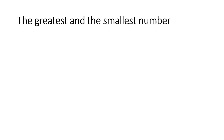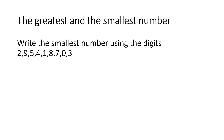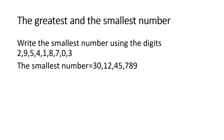To form the smallest number using the digits 2, 9, 5, 4, 1, 8, 7, 0, 3: we write the smallest digit first, but since 0 cannot be the first digit, we write 3 first, then 0, then the remaining digits in ascending order: 1, 2, 4, 5, 7, 8, 9. So the smallest number using these digits is 30 crore, 12,45,789.